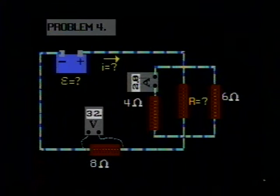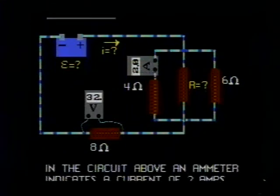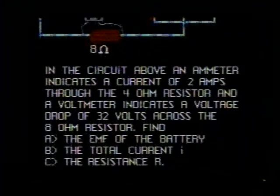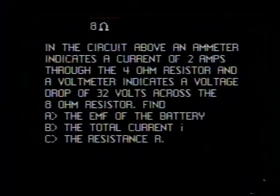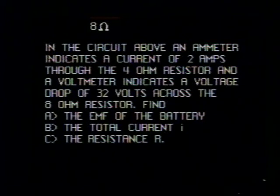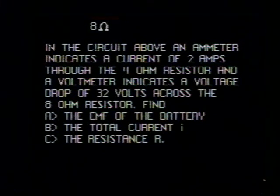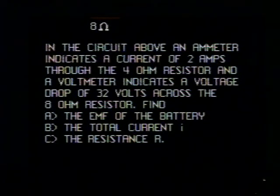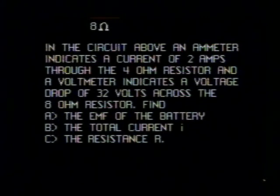Problem 4. We will read the problem first and then go back to the figure. In the circuit above, an ammeter indicates a current of 2 amps through the 4 ohm resistor, and a voltmeter indicates a voltage drop of 32 volts across the 8 ohm resistor. Find A, the EMF of the battery, B, the total current I, and C, the resistance R.